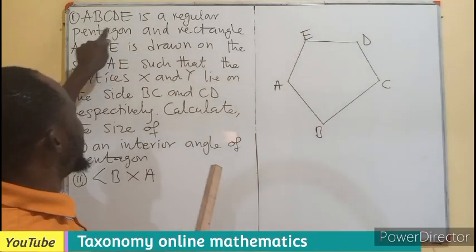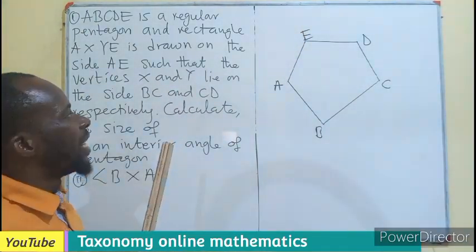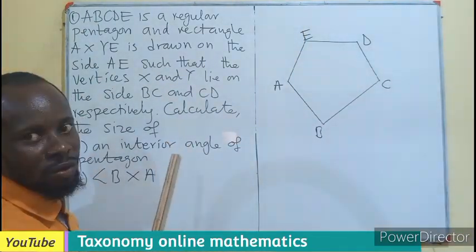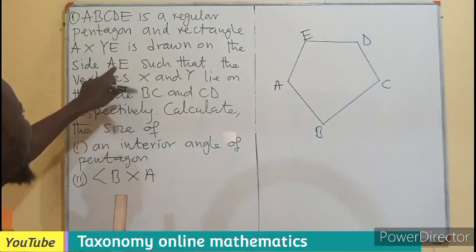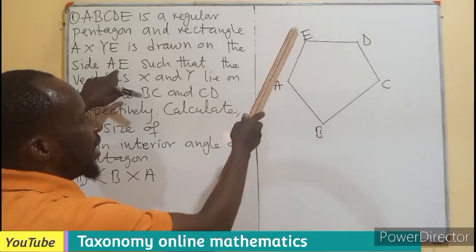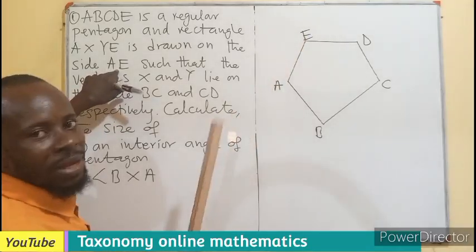That's the pentagon: A, B, C, D, E. Then a rectangle is also drawn on it. We are drawing the rectangle at where? The side AE. So this is where the rectangle is going to be, right?